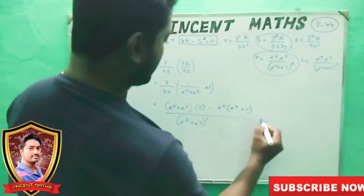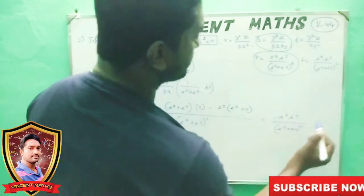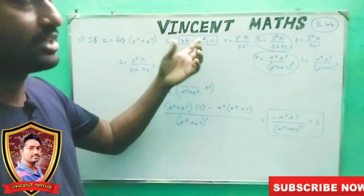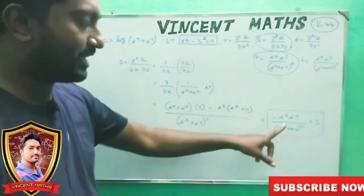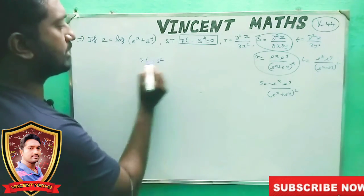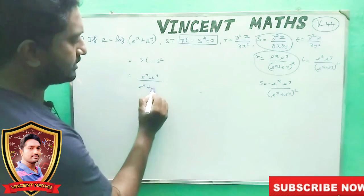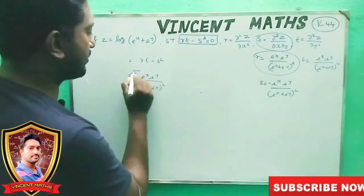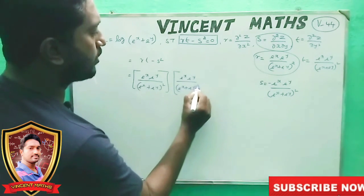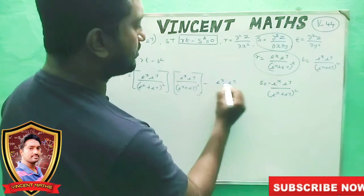Simplifying: s equals minus e power x into e power y divided by e power x plus e power y whole squared. Now we add S to R and T. We have r equals e power x into e power y divided by e power x plus e power y whole squared, minus s squared, plus t value e power x into e power y divided by e power x plus e power y whole squared.